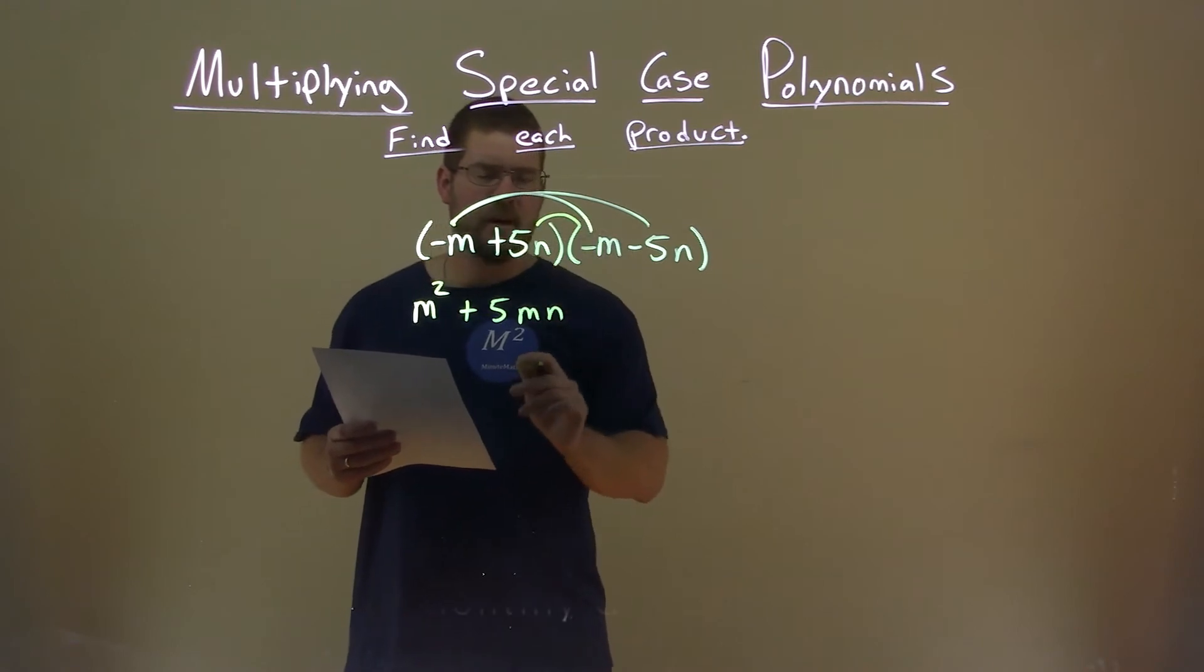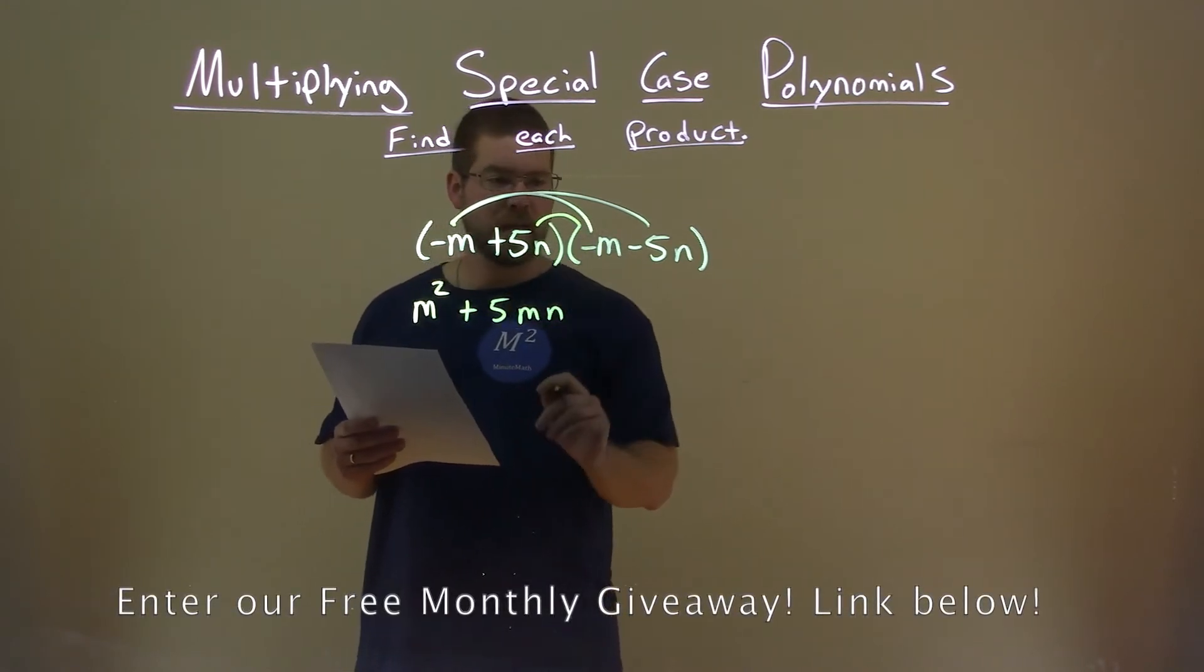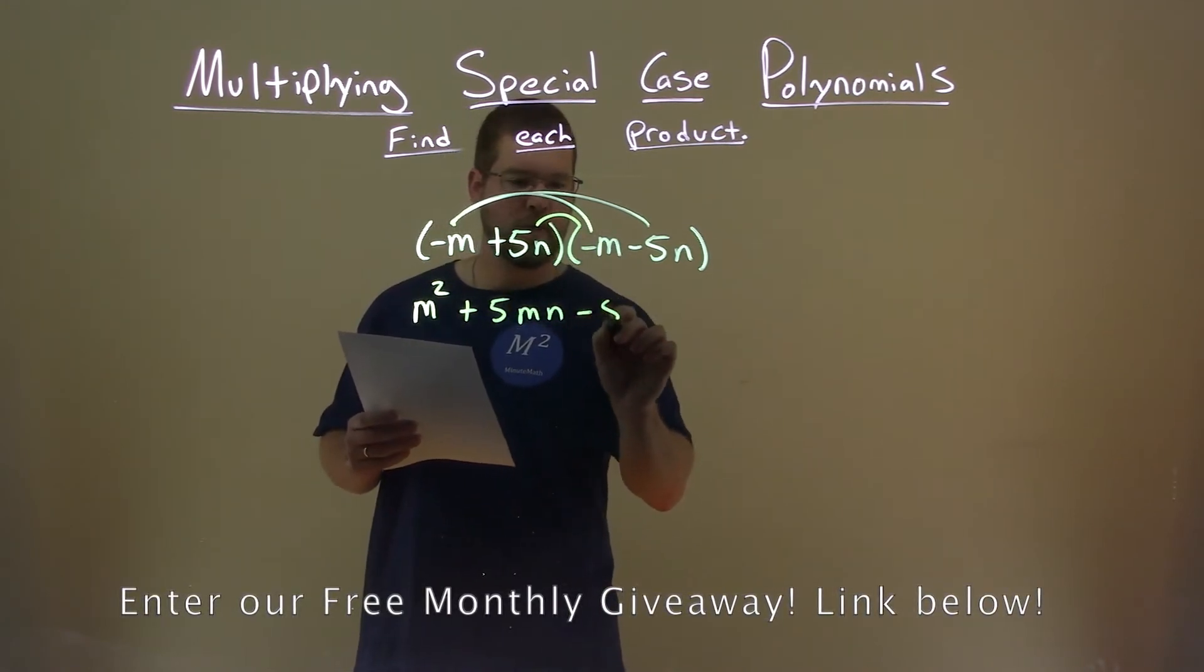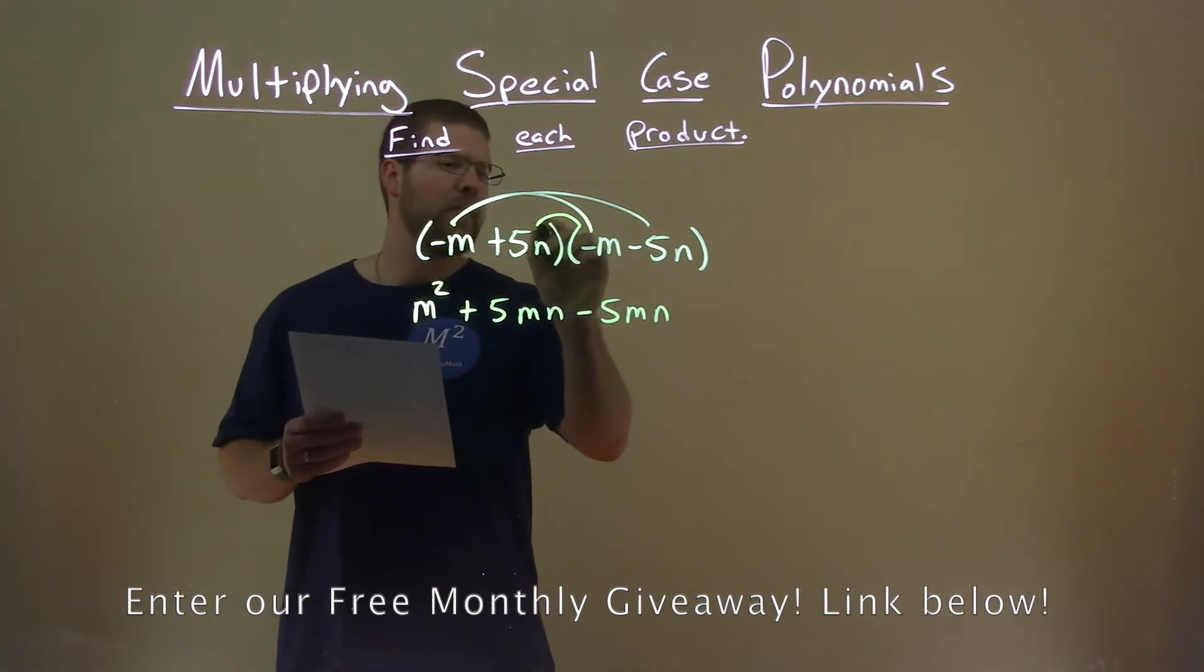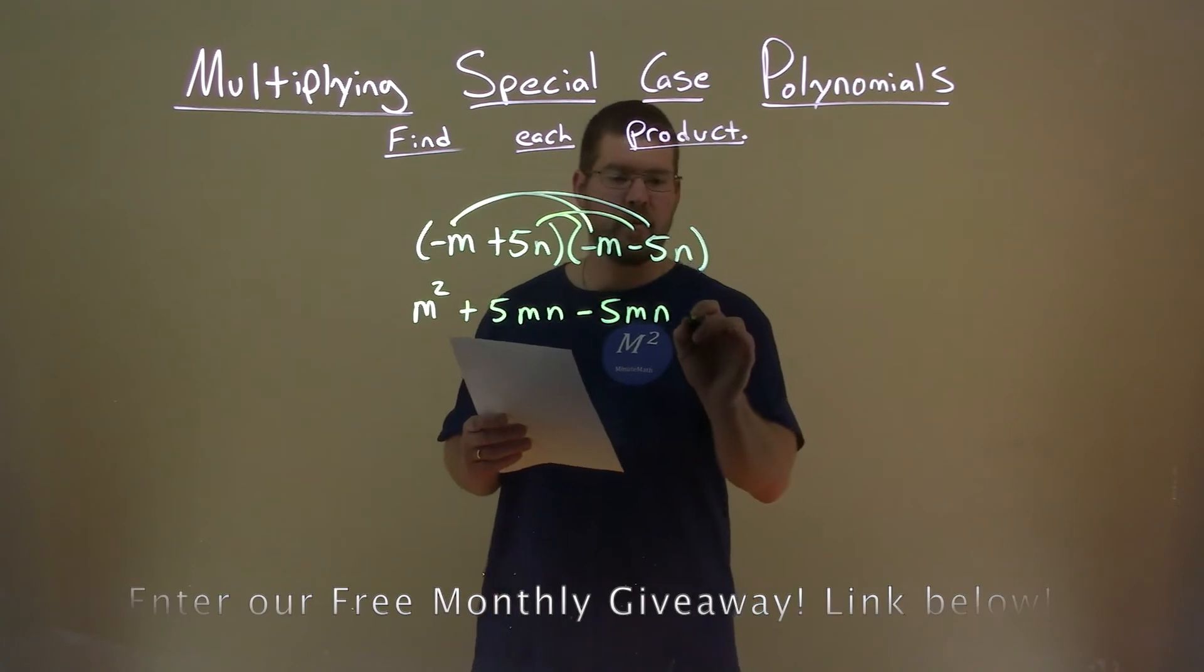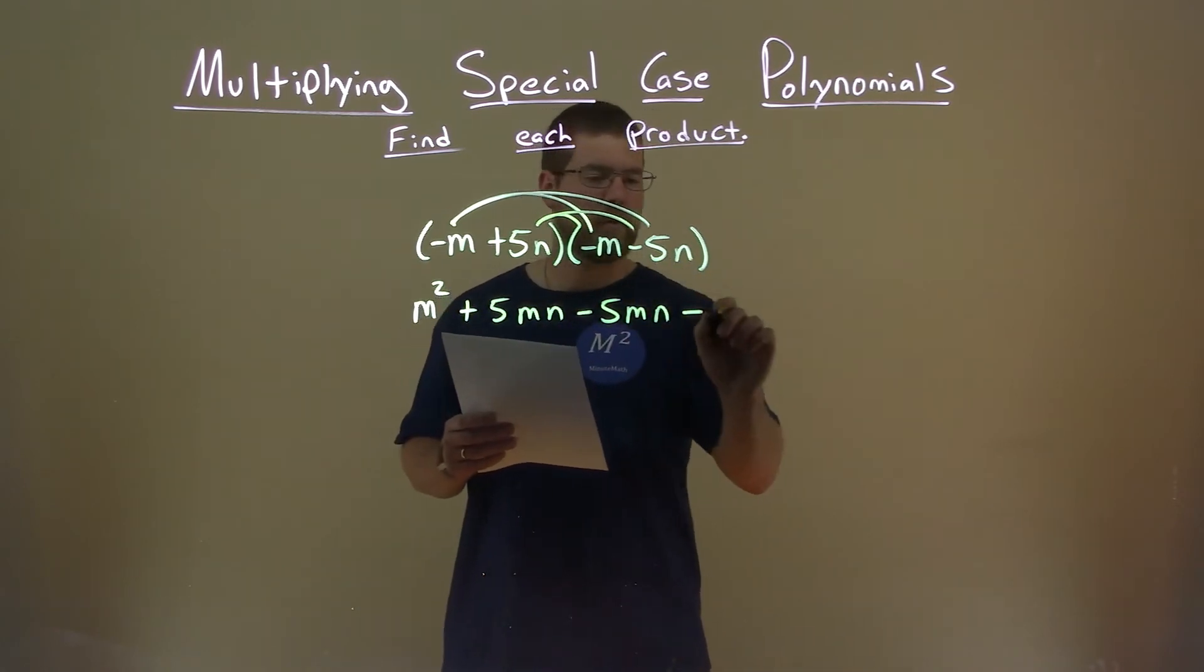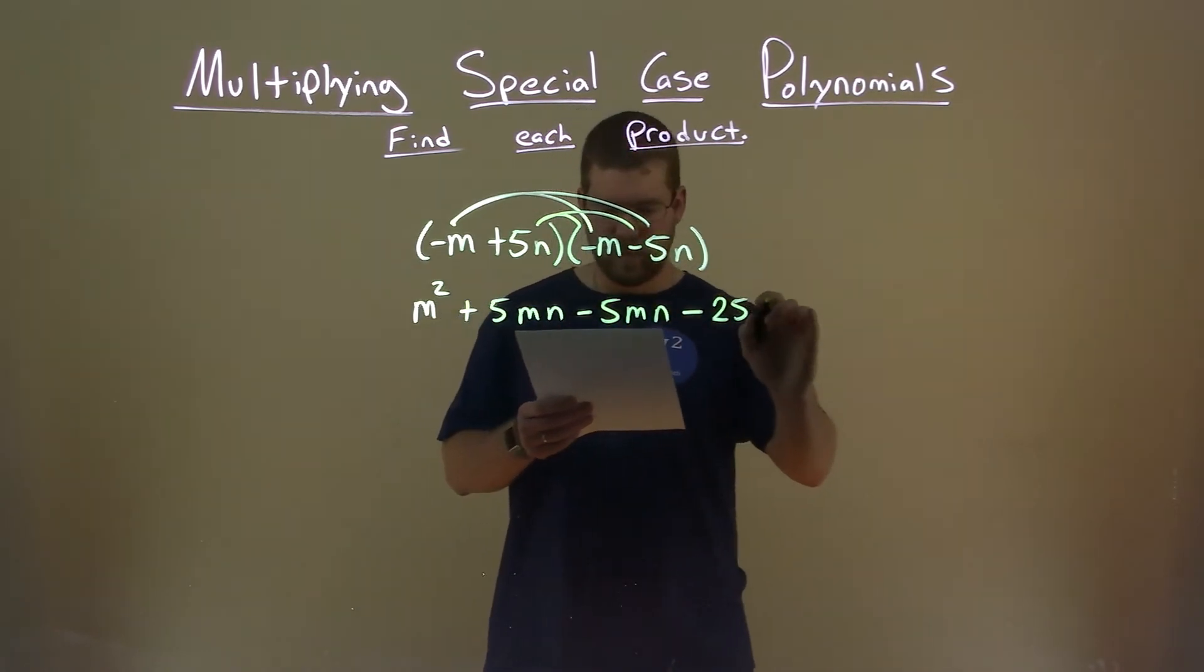Now we have the inside one. 5n times negative m, that's minus 5mn. And 5n times minus 5n, that's a minus: 5 times 5 is 25, and n times n is n squared.